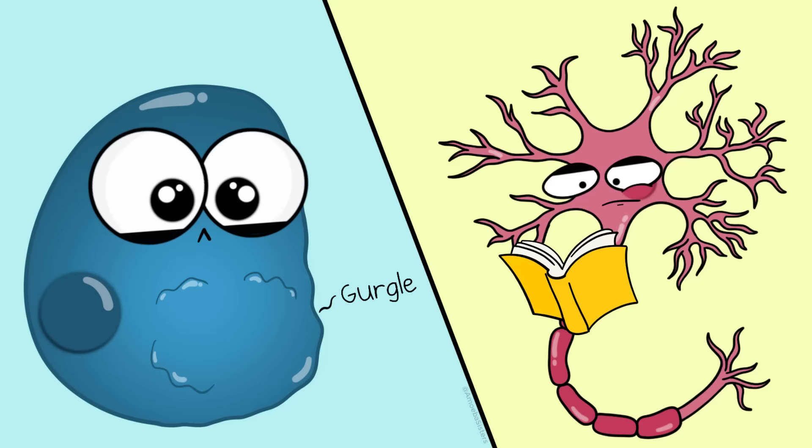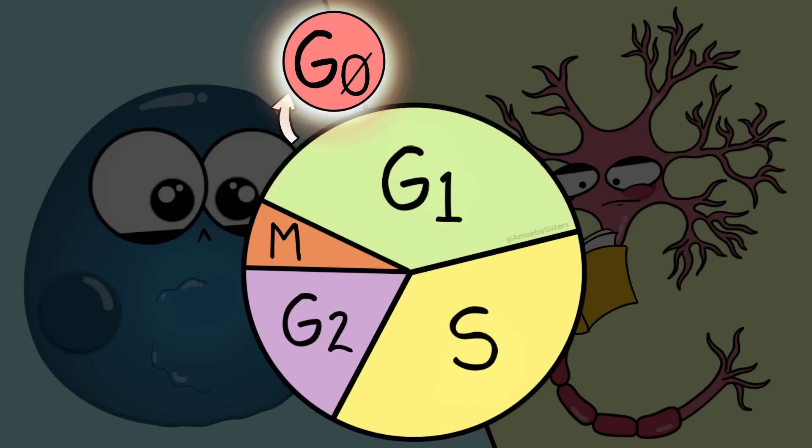But some, like many types of neurons in your brain and spinal cord, may stay here permanently. If they stay here permanently, they'll never get to M phase, so they will not divide.